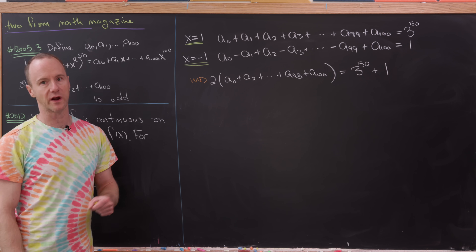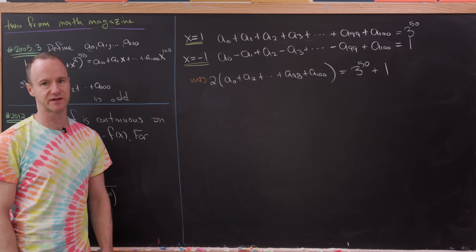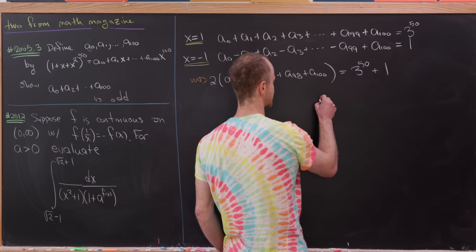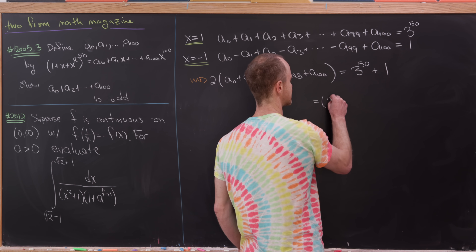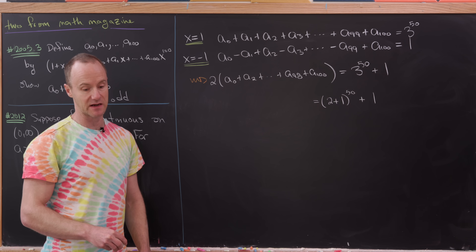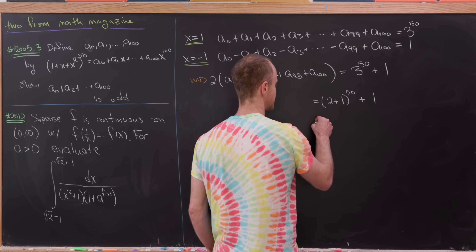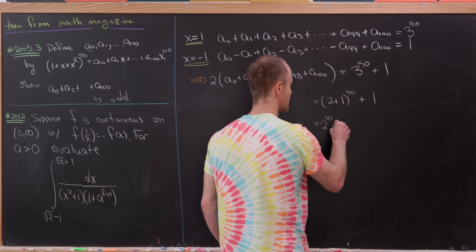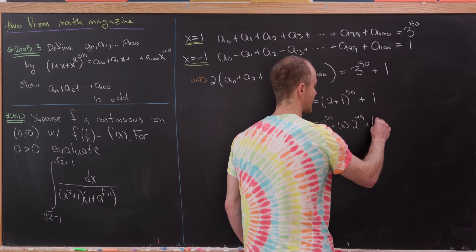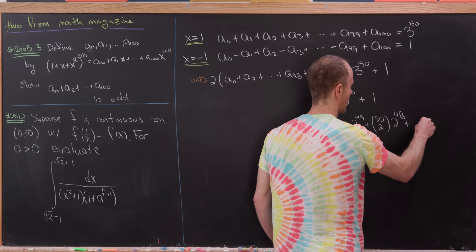It could be a multiple of 4, in which case we'd get an even number when dividing by 2. Let's handle this without modular arithmetic. We write 3^50 + 1 as (2 + 1)^50 + 1, then expand (2 + 1)^50 using the binomial theorem: 2^50 + 50·2^49 + C(50,2)·2^48 + ... + 50·2^1.